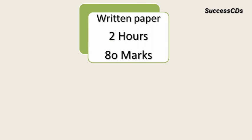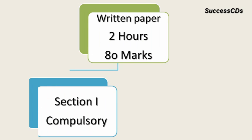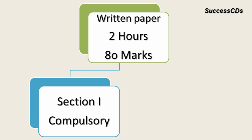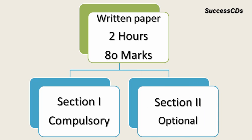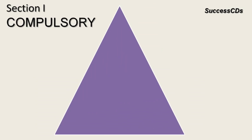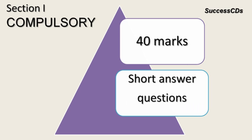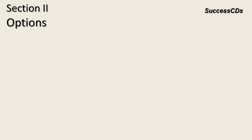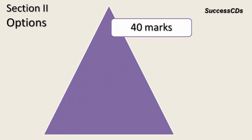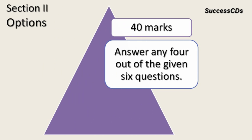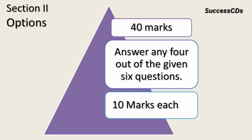The written paper, which is for 80 marks, is for 2 hours duration. Section 1 in the paper shall be compulsory and Section 2 has some options. Section 1, that is the compulsory section, carries 40 marks weightage — there will be short answer questions which you have to give. Section 2, which has options, is also for 40 marks weightage. You have to answer any 4 questions out of the given 6 questions. Each question is given a weightage of 10 marks.